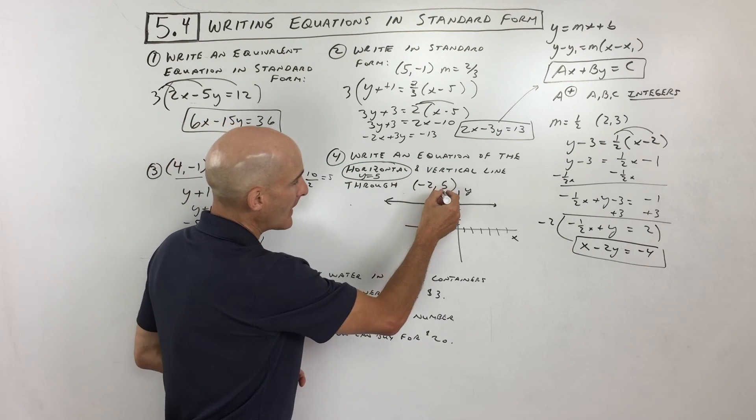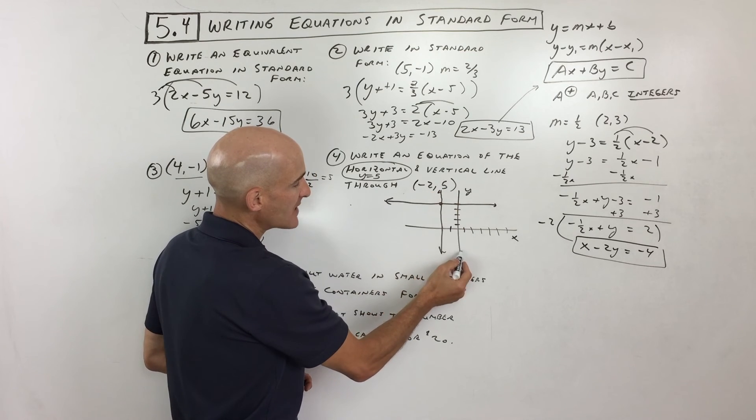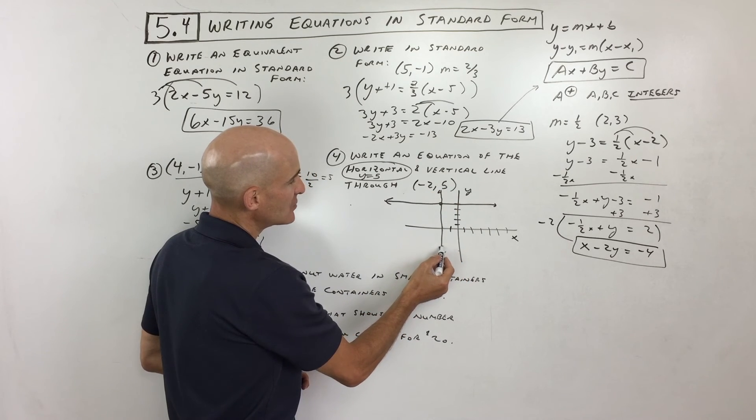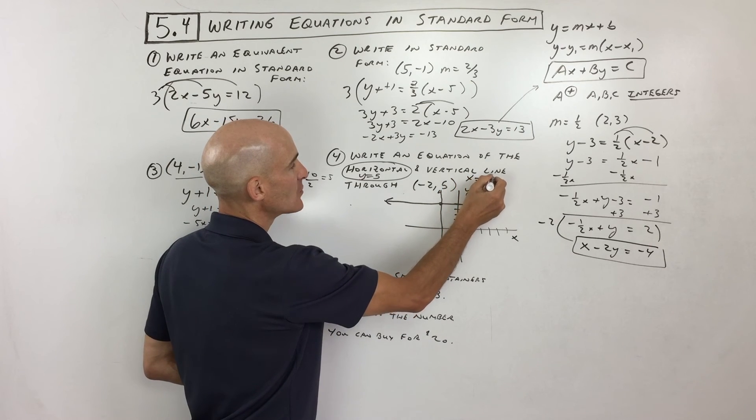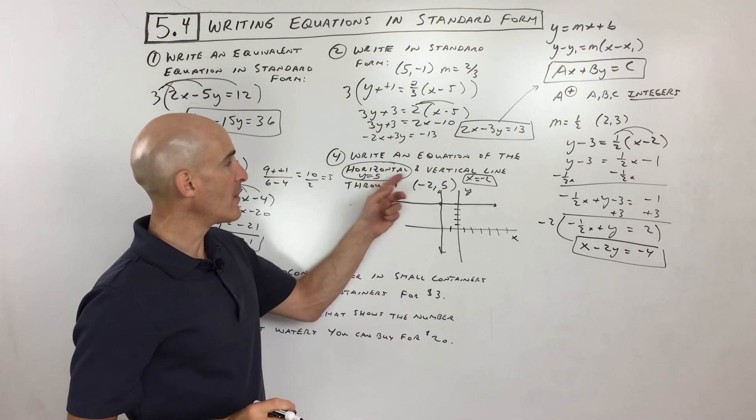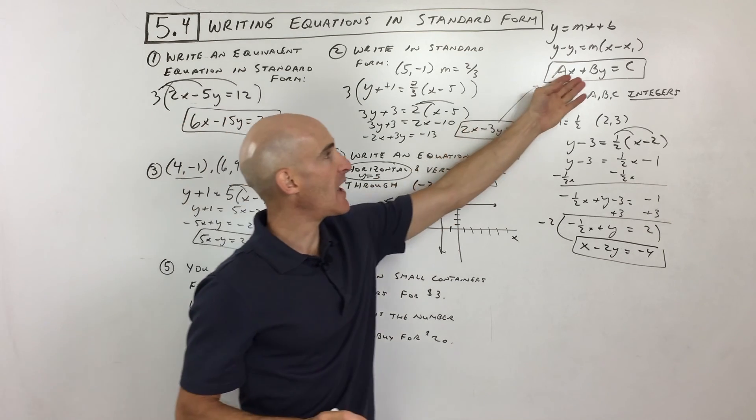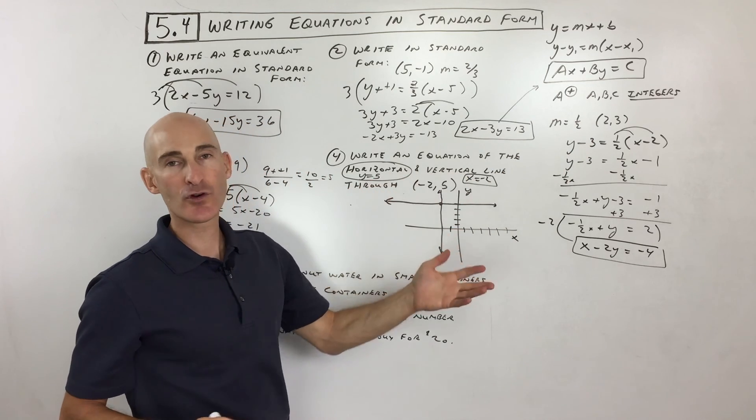Now what about the vertical line through the same point? Well, you can see no matter what y is, if y is negative 5, x is negative 2. If y is positive 5, x is negative 2. So the vertical line is going to be x equals negative 2. These are special cases. These are cases where you just have one variable, okay, as opposed to an x and a y. So that way, when you see just one variable like that, you know it's going to be a vertical or horizontal line.